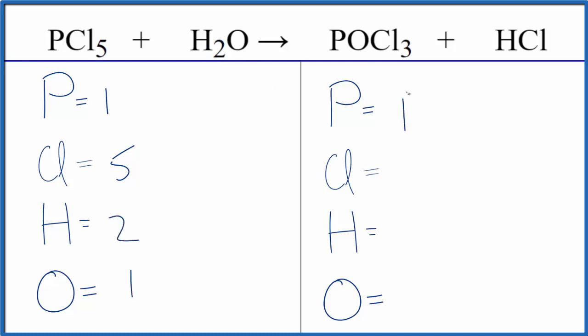On the product side, we have 1 phosphorus. Be careful here, we have 3 chlorines in POCl3, but then we have this one here in HCl. So we have 4 total chlorine atoms, 1 hydrogen and 1 oxygen.